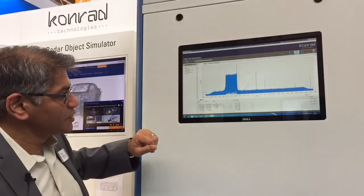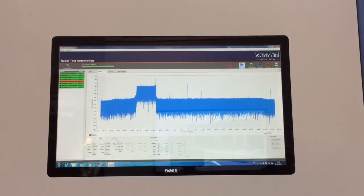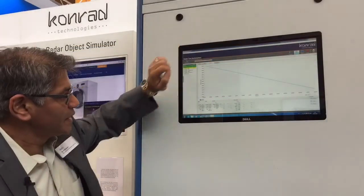So over here now you're seeing the power level, and then you can see the linearity measurement that's here, and you can see the phase noise as well.